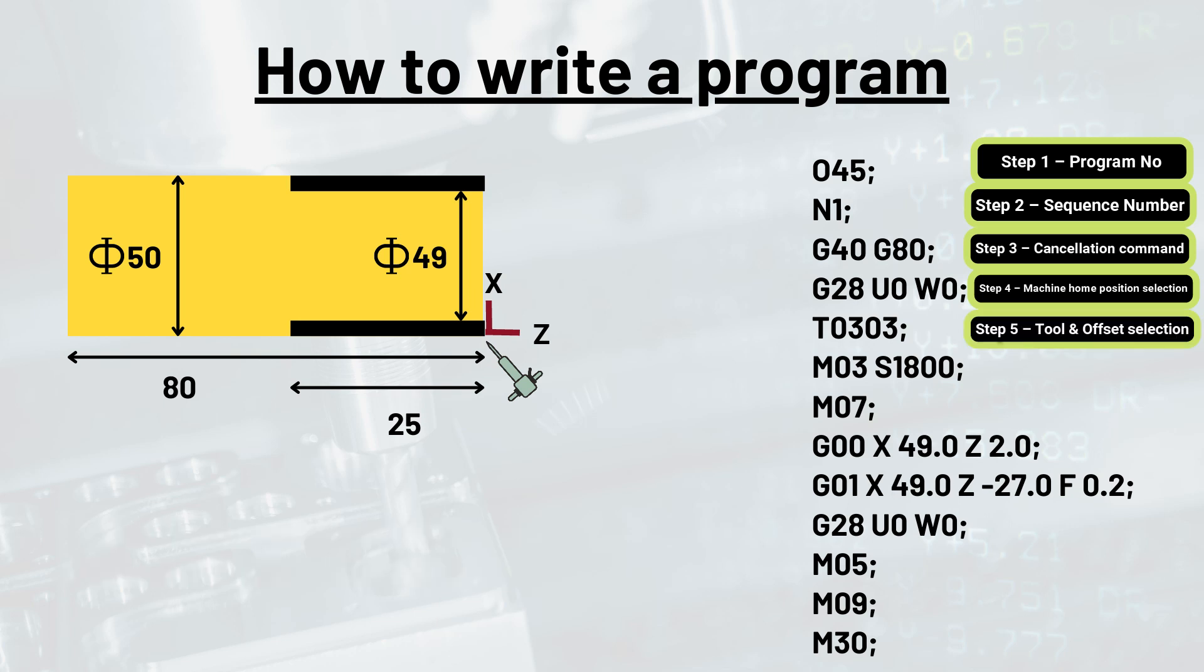The fifth step is tool and offset selection. The command for providing tool number and offset number is given by T0303, in which the first two digits, that is 03, is the tool number assuming tool number 3 is used, and the next two digits, 03, is the offset number.